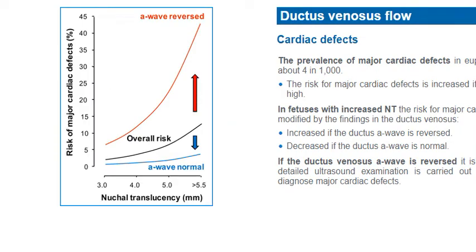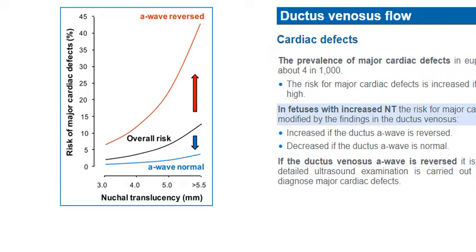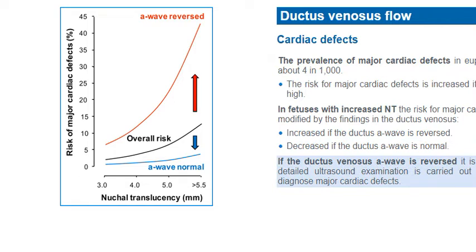There is an association between reversed A wave in the ductus venosus and fetal cardiac defects. The prevalence of major cardiac defects in euploid fetuses is about 4 in 1,000. The risk for major cardiac defects increases with increasing fetal nuchal translucency thickness, as shown in the graph. In fetuses with increased nuchal translucency, the risk is modified by ductus venosus findings: increased if the A wave is reversed, and decreased if the A wave is normal. If the ductus venosus A wave is reversed, detailed ultrasound examinations should be carried out to exclude or diagnose major cardiac defects.